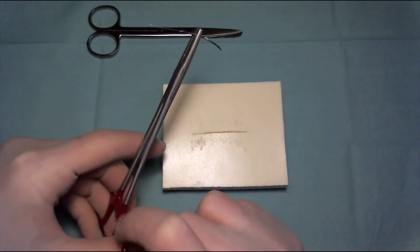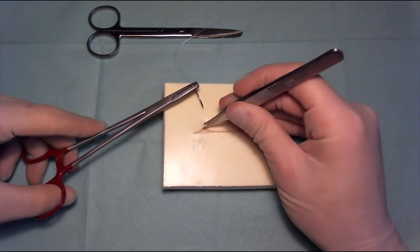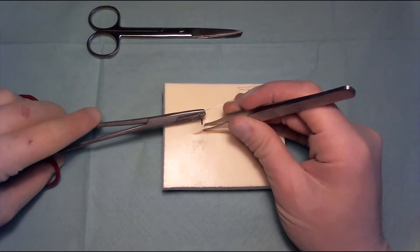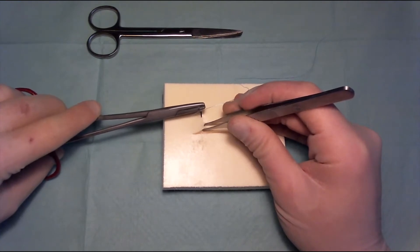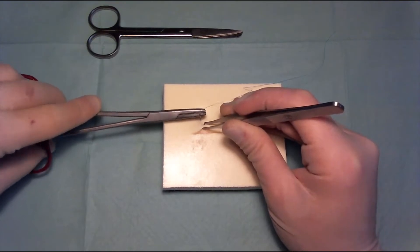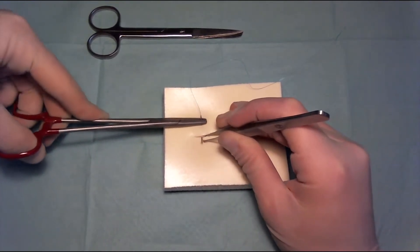We're going to start by everting the skin as well, but instead of starting at about half a centimeter, we're going to start a little bit further away from the wound edge. So we're going to go in here, put it through, and come out over here.